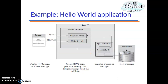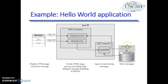This is an example of a Hello World application. In the browser, it displays an HTML page and sends a user message. It invokes a request and sends it to the web container using the display server. The display server goes to the EJB container, sends a message, processes it, stores data, and responds back to the model EJB residing in the EJB container, then responds back to the web container, which displays the results. This is basically how a Hello World application works in a Java EE application.